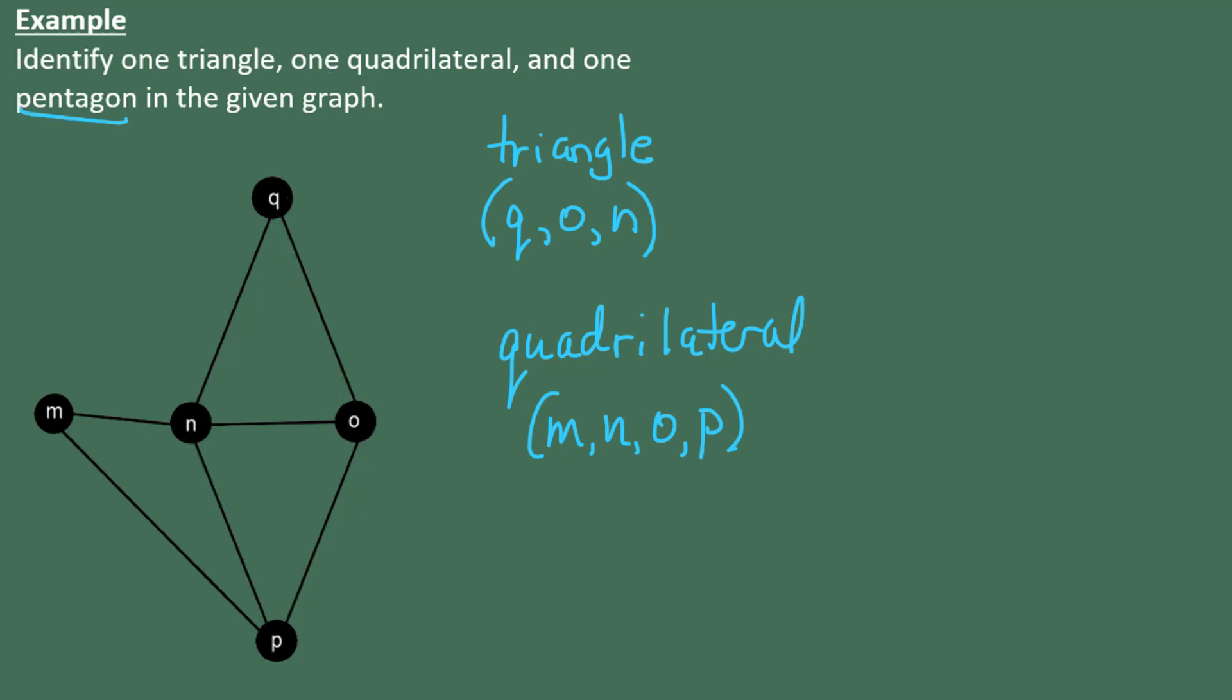And now we're asked to find a pentagon. So pentagon means a fivegon. So we need to find five vertices that are connected sequentially. So for example, I might choose to go from M to P, P to O, O to Q, back to N, and then to M. Notice since there are only five vertices in the whole graph, we would have to use all five of the vertices to form a pentagon. M to P, P to O, O to Q, Q to N, and back to M again.